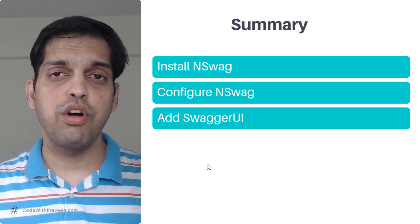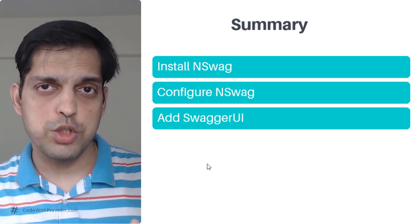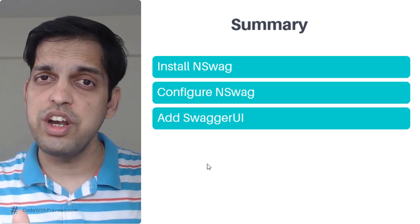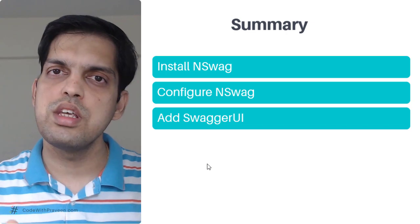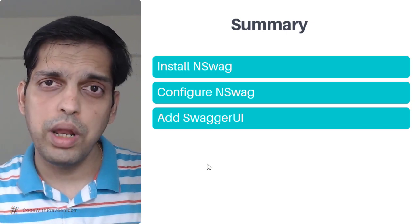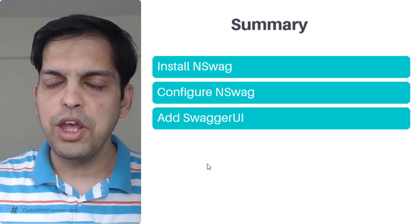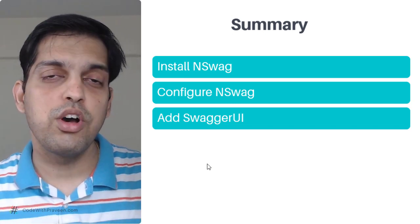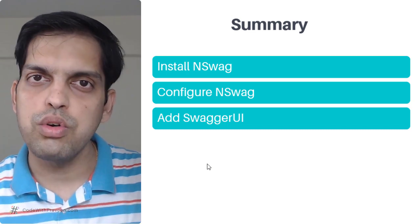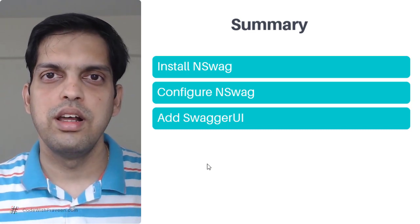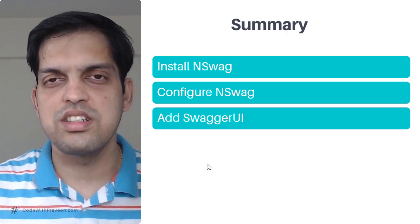So far, we have seen how to use NSwag as one package along with Swashbuckle as another package to generate OpenAPI documentations. In the forthcoming sections, we will see how to enhance these OpenAPI documents to add additional details, which are going to make your life a lot easier by giving more helpful hints and comments throughout the documentation process. Let's look at one such tool called API Analyzers in the next section.